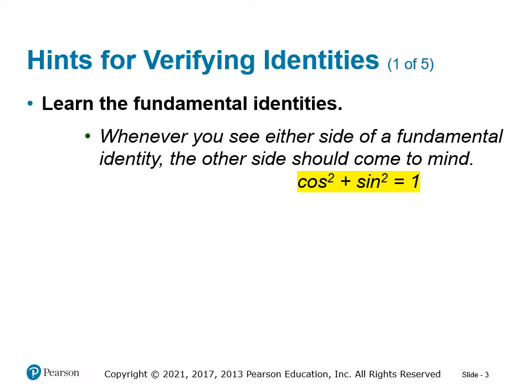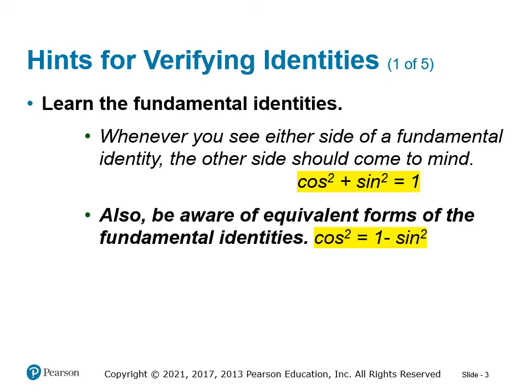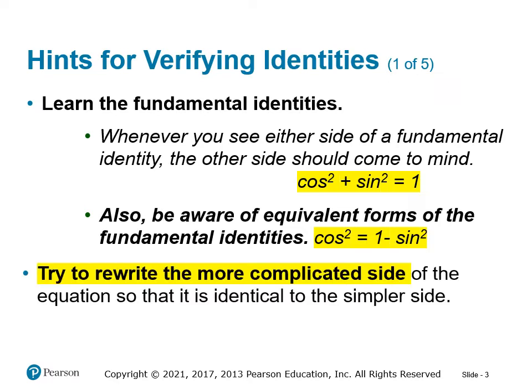For example, if you see sine squared plus cosine squared, hopefully that creates the recognition that it equals one. It's also important that for each identity you're aware of, you can manipulate them to create alternative forms. For example, cosine squared plus sine squared equals one can also be written as cosine squared equals one minus sine squared. When working with verifying identities, pick the side that looks more complicated, since simplifying it usually helps create the other side.